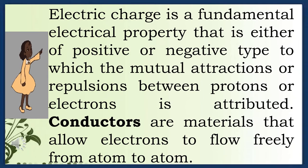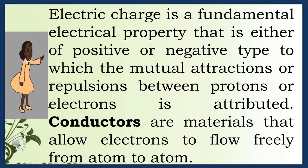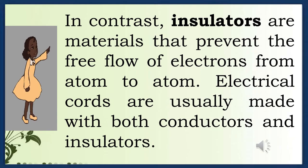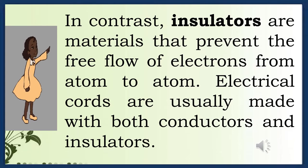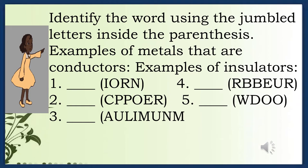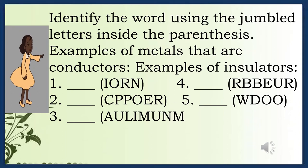Electric charge is a fundamental electrical property — either positive or negative — to which the mutual attractions or repulsions between protons and electrons is attributed. Conductors are materials that allow electrons to flow freely from atom to atom. In contrast, insulators are materials that prevent the free flow of electrons from atom to atom. Electrical cords are usually made with both conductors and insulators. Examples of conductors: iron, copper, aluminum. Examples of insulators: rubber, wood.